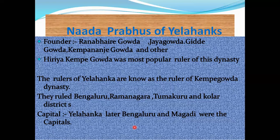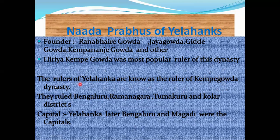Now we move to the Nada Prabhu of Helhanka. The founder was Rana Bhaira Gowda, followed by Jaya Gowda, Kempe Gowda, Kempannaji Gowda, and others. Kiriya Kempe Gowda was the most powerful ruler of the Helhanka dynasty. The rulers of Helhanka are known as the Kempe Gowda dynasty, and they ruled Bangalore, Ramanagara, Tumkuru, and Kolar districts.